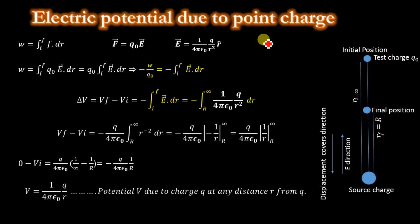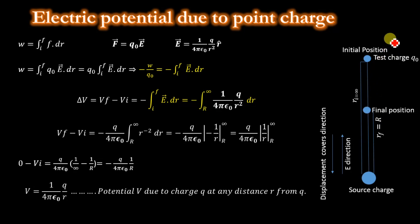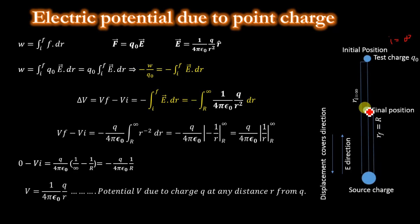Now, electric potential due to a point charge. Let's consider this as a source charge. This is the initial position of the test charge and this is the final position. Let's suppose the initial position I is equal to infinity. When we apply force to this test charge and do work against the electric field of the source charge, the work done is equal to W equals the integral from I to F of F dot dr.